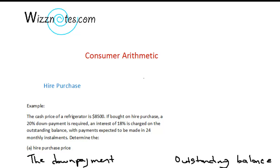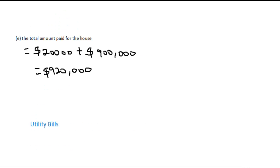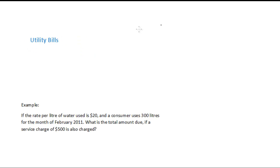Welcome to part 2 of WisNotes.com Consumer Arithmetic Tutorial. Let's look at utility bills. Utility bills are bills such as your water bill, your light bill, etc. And there's a common way in which the price paid for the utility is determined.